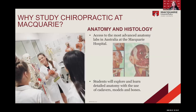One of the strongest aspects of the Macquarie chiropractic program is its solid foundation in anatomy and histology. We have access to the most advanced anatomy labs in Australia, located at Macquarie Hospital, where students explore and learn anatomy using cadavers, models, and bones.